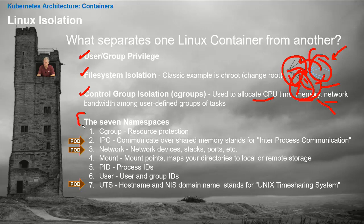Item number one: namespace CGroup. This is the resource protection — that's what we just spoke about. This is regarding how much CPU, how much bandwidth, and how much memory each particular container will get. That's namespace one. Six more to go.